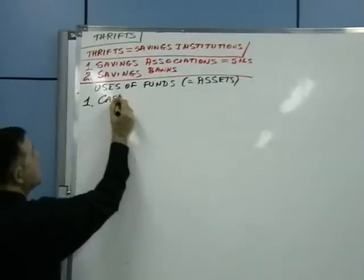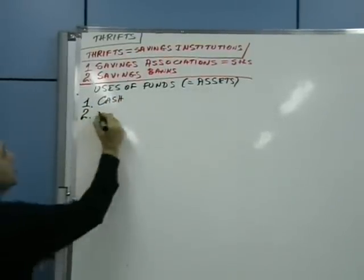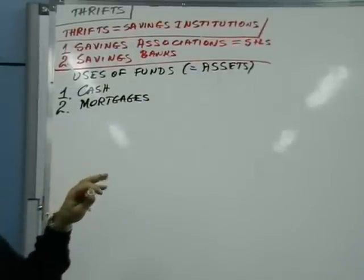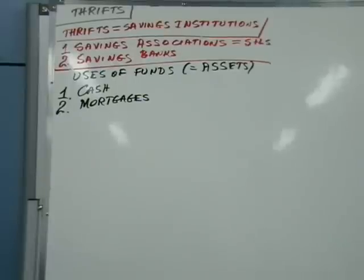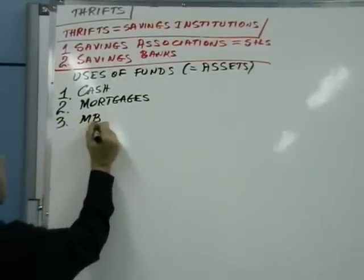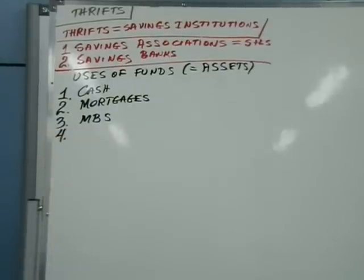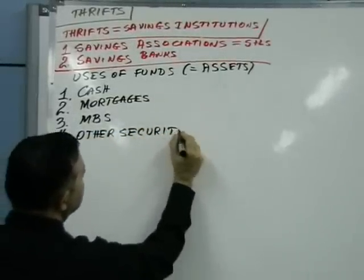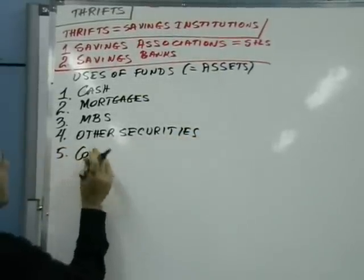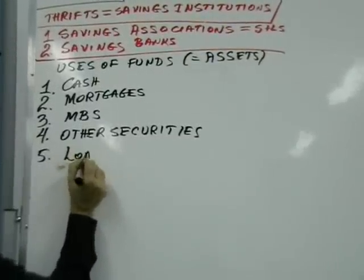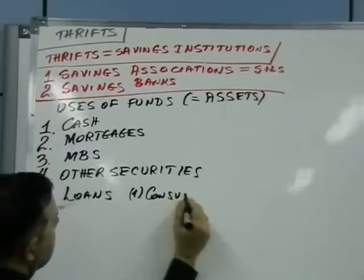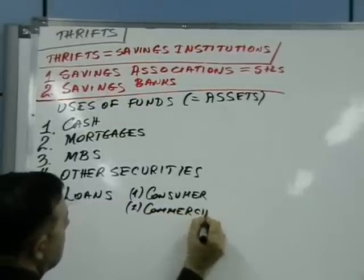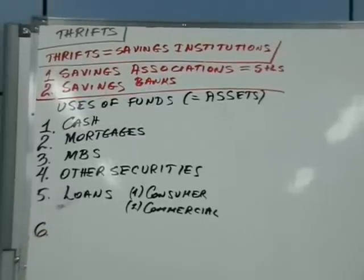Number one is cash, which they usually hold. Number two is mortgages — their primary investment. Number three is mortgage-backed securities. Number four is other securities. Number five is loans — consumer and commercial. Number six is other uses.